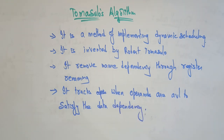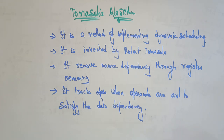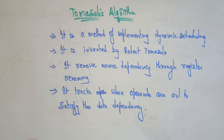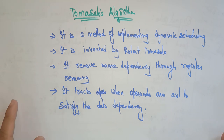These are the main points to remember: it is a method for implementing dynamic scheduling, it uses register renaming to avoid hazards, and it tracks when operands are available to satisfy data dependencies. It differs from scoreboarding in that it uses register renaming to eliminate output and anti-dependencies — that is WAW and WAR hazards.